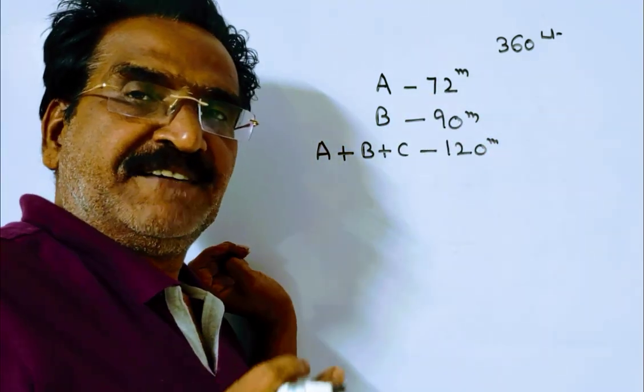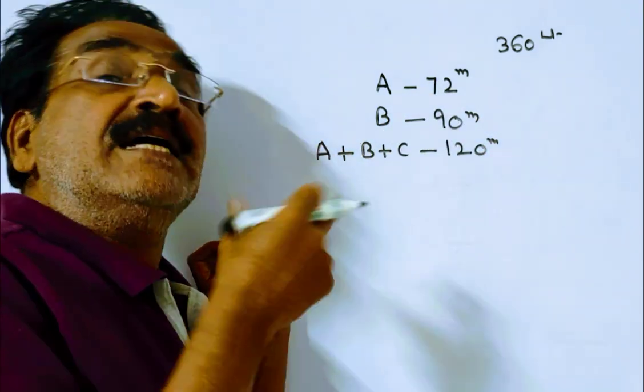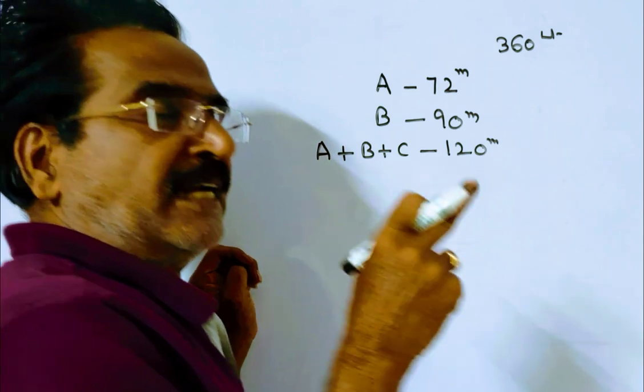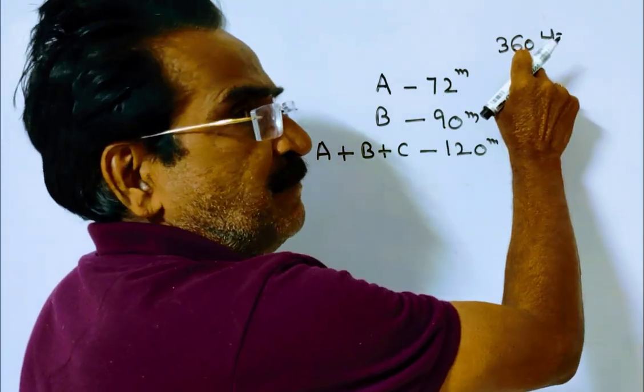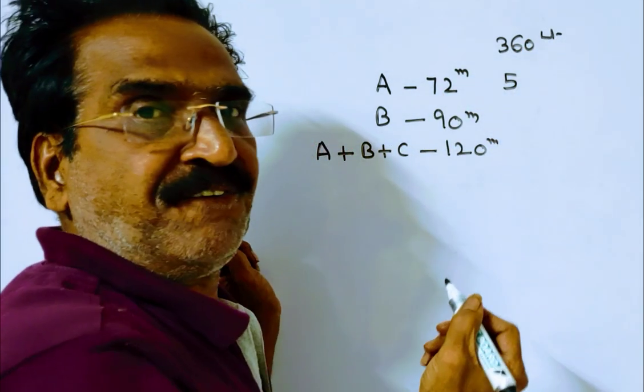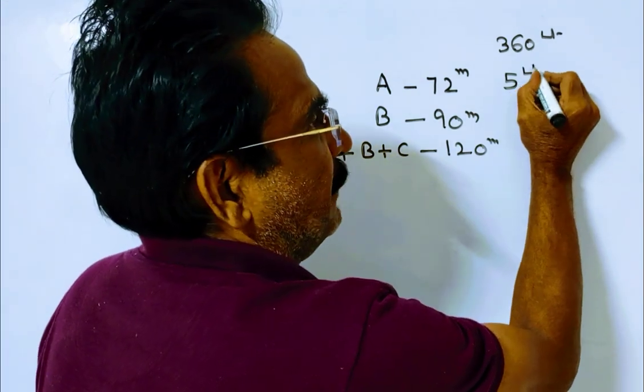Pipe A can fill the tank in 72 minutes. That means 360 divided by 72. So pipe A can fill 5 liters of water per minute.